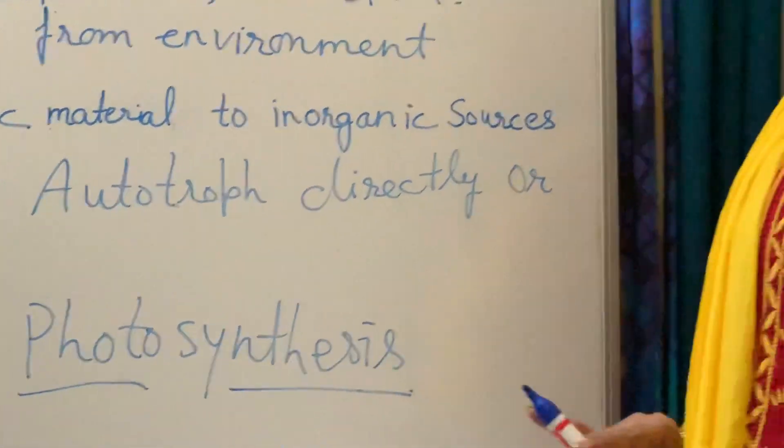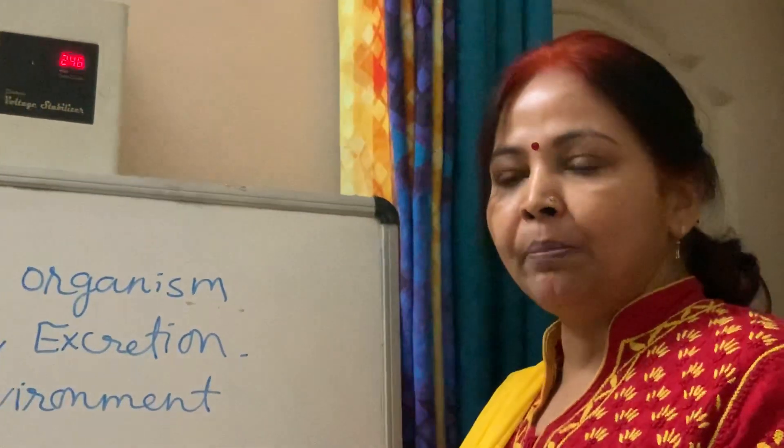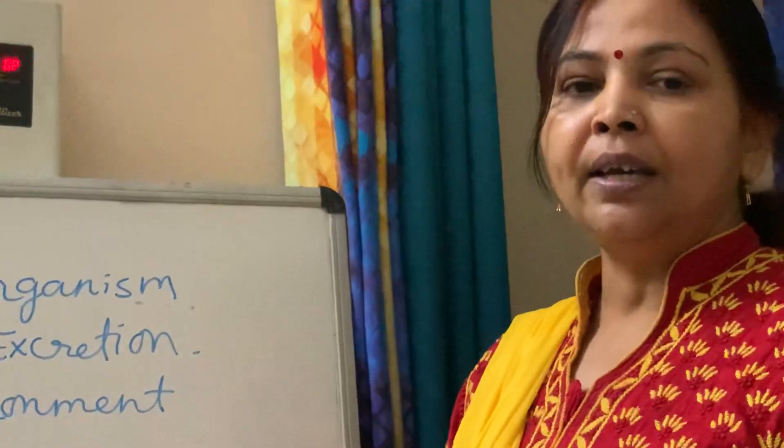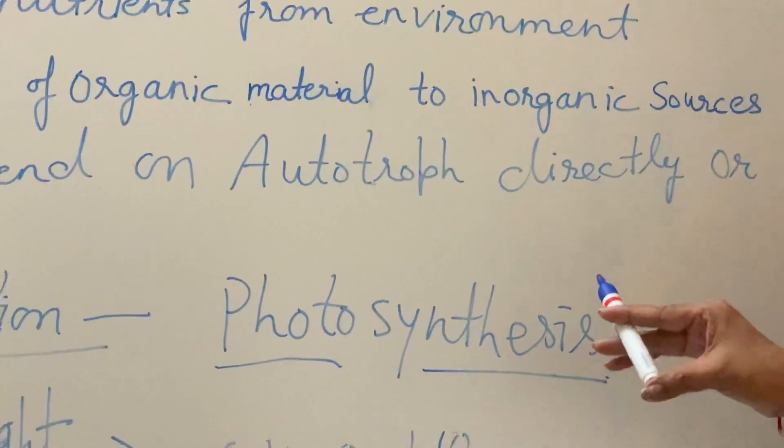The photosynthesis process is completed in two steps: step one is the light-dependent step, and step two is the light-independent step. Basically, three events occur in photosynthesis: first, receiving sunlight through chlorophyll; second, dissociation of water molecules into H and O; and third, reduction of carbon dioxide into glucose. These three events together complete the photosynthesis process.